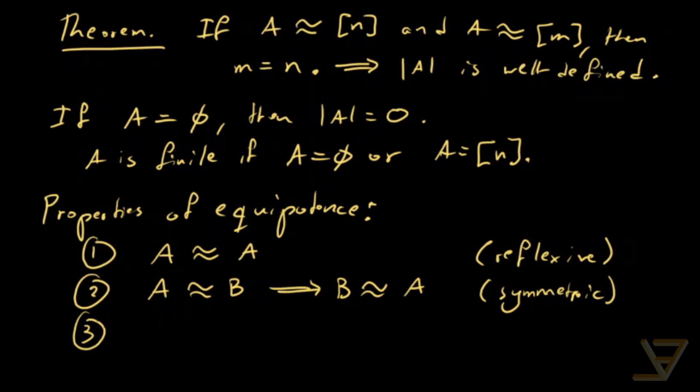And the third one is that if A is equipotent with B, and B is equipotent with C, then A is equipotent with C, and we call that transitive.